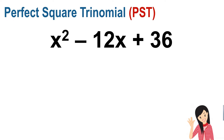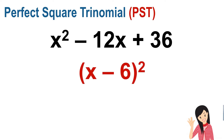For the perfect square trinomial, the first and last terms must be perfect squares, and when you get their square roots and multiply by 2, that must equal the middle term. To get the answer, take the square root of the first term — x squared becomes x — and the square root of the last term, 36, becomes 6. Then copy the sign of the middle term.